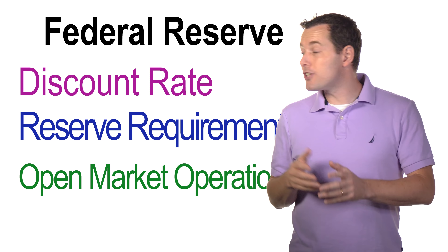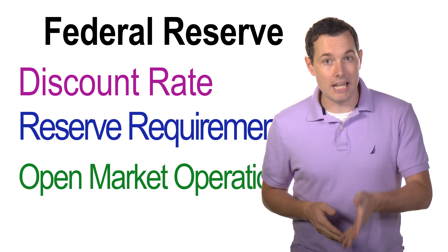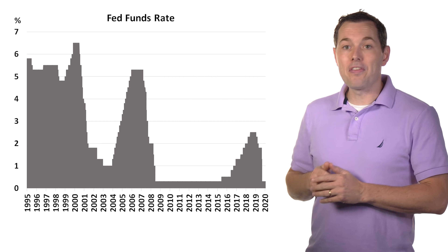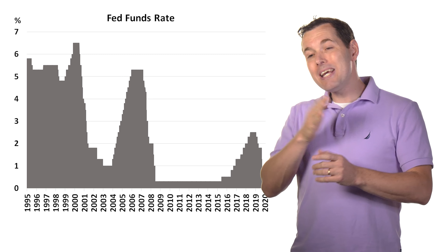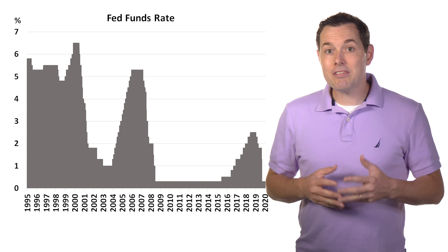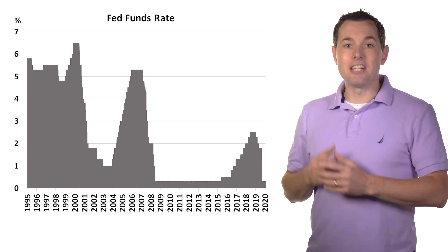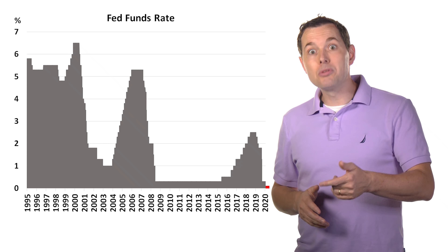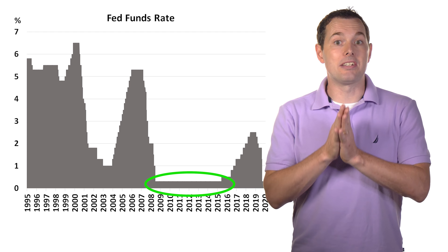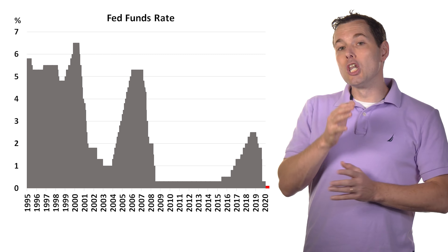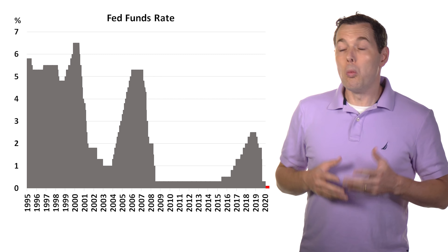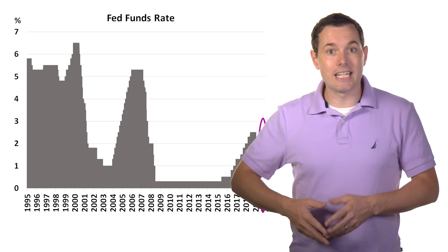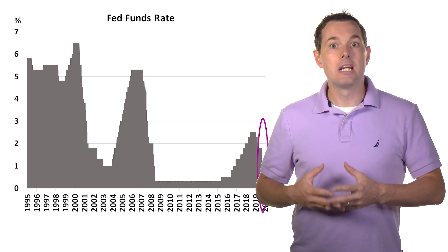Let's look closer at how the Fed uses each of these tools to improve the economy today. Starting with the discount rate, or Fed funds rate — this is what it has looked like going back to the mid-1990s. The current rate is set to zero, which is actually lower than it was post-financial crisis. The Fed lowers interest rates when the economy gets in trouble, as they did most recently when the current economic situation came upon us.